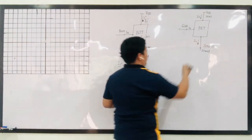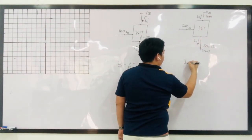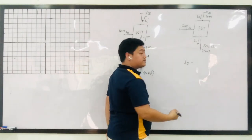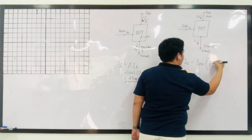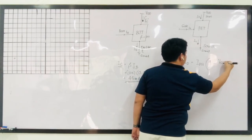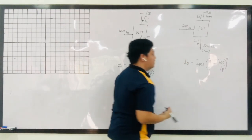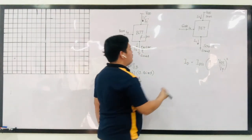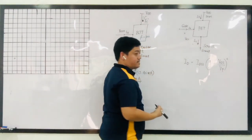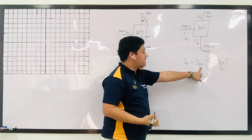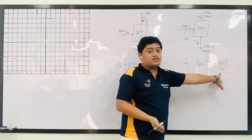For our FET, the drain current ID is equal to IDSS times 1 minus VGS over VP, all squared. Your VGS is the voltage between your gate and your source. Your IDSS is the drain saturation current, while your VP is your pinch-off voltage.